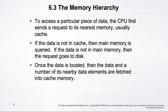To access a particular piece of data, the CPU will first send a request to its nearest memory, usually the cache. If the data is not in the cache, then the main memory is queried. If the data is still not found in main memory, then the request goes to the disk. That keeps a hierarchical query structure.